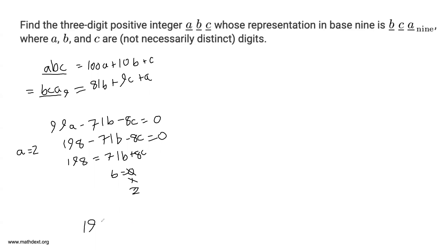What happens if B equals 2? You have 198 is equal to 71 times 2, 142 plus 8C. Rearrange. You get 56 is equal to 8C. So C is equal to 7. And you see right here that you've just found a solution.